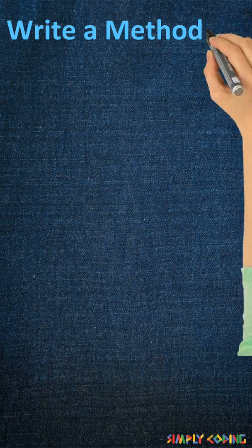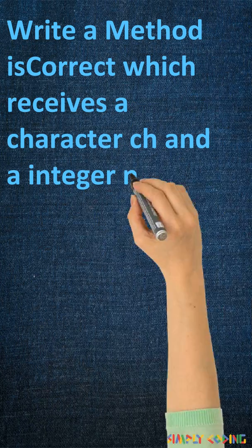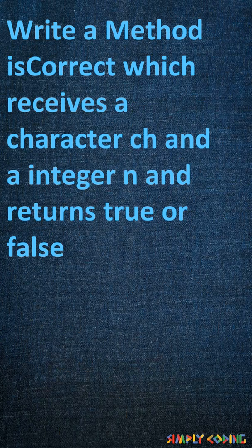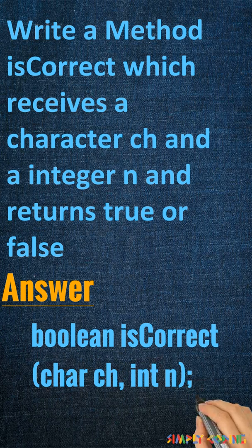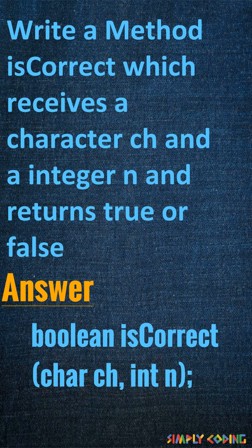The second question could be: write a method 'isCorrect' which receives a character and an integer and returns true or false. Here you will use boolean as the return type and char and int as the parameters. Stick to only answering the question which is asked and do not try to add your own class or access specifier.